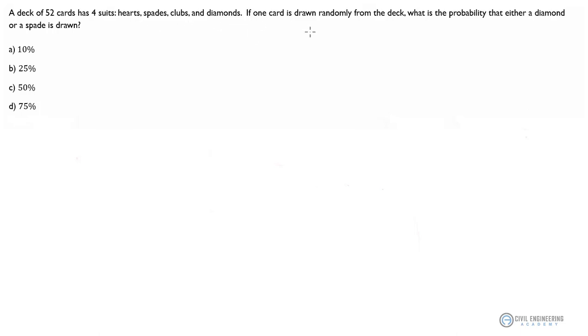If one card is drawn randomly from the deck, what is the probability that either a diamond or a spade will be drawn? So if we look up in our handy-dandy FE reference handbook and we look up the law of total probability...